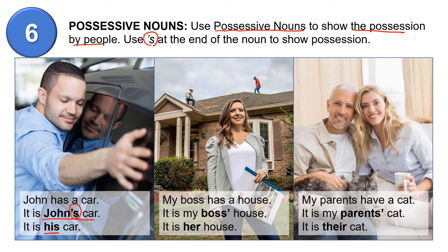My boss has a house, and my boss is a woman. It is my boss's house. It is her house. Now, boss is ending with an S. In this case, you can just put apostrophe, or if you want, you can put apostrophe S. Either way is okay.